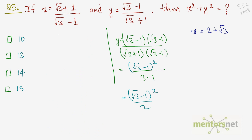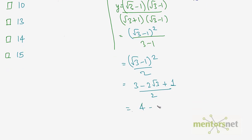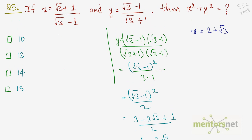Simplifying y: (√3 - 1)² = (√3)² - 2·√3·1 + 1² = 3 - 2√3 + 1 = 4 - 2√3. Dividing by 2 gives (4 - 2√3)/2 = 2 - √3. Therefore y = 2 - √3.